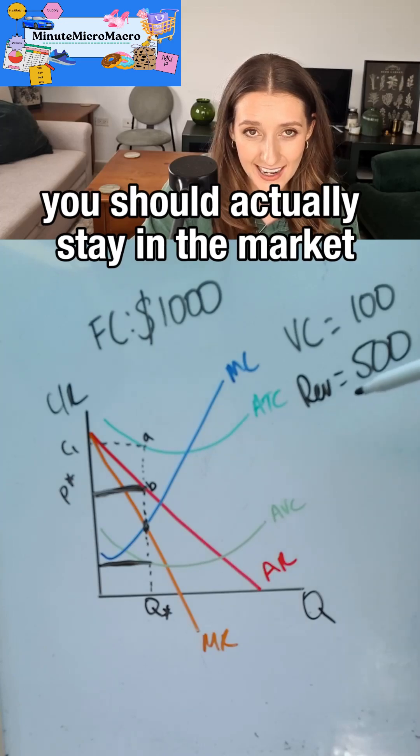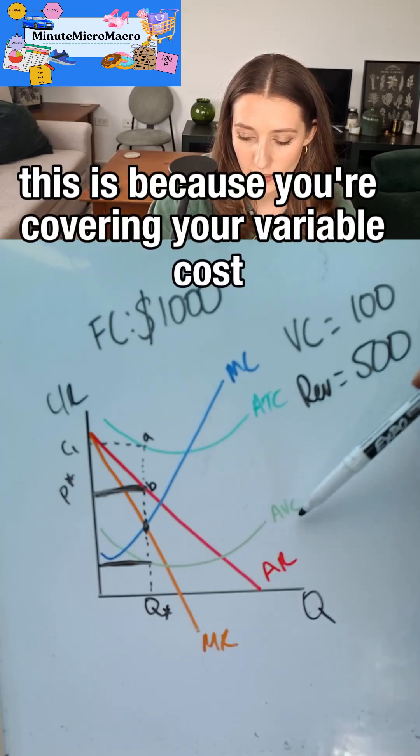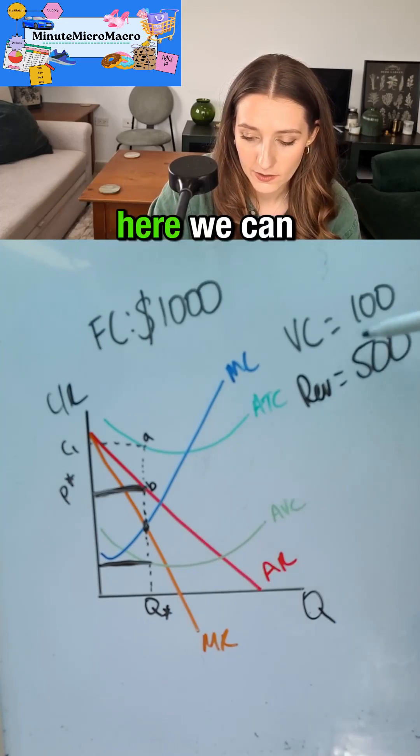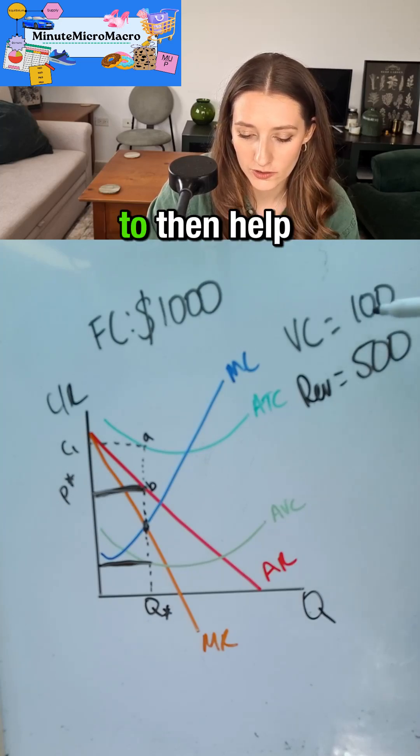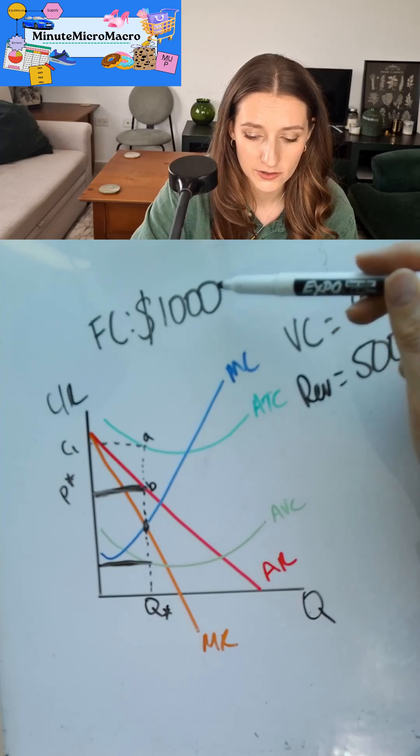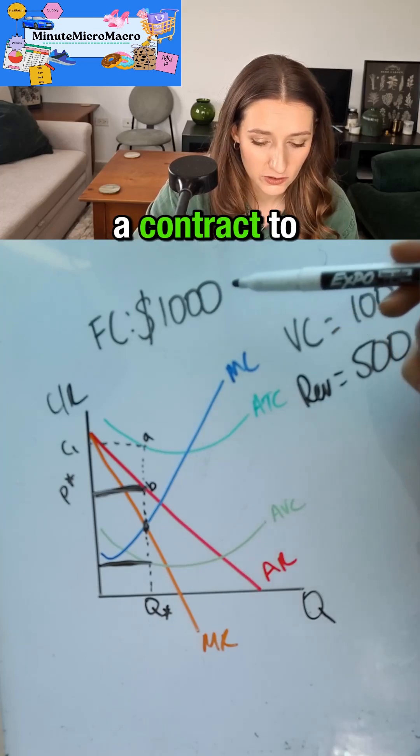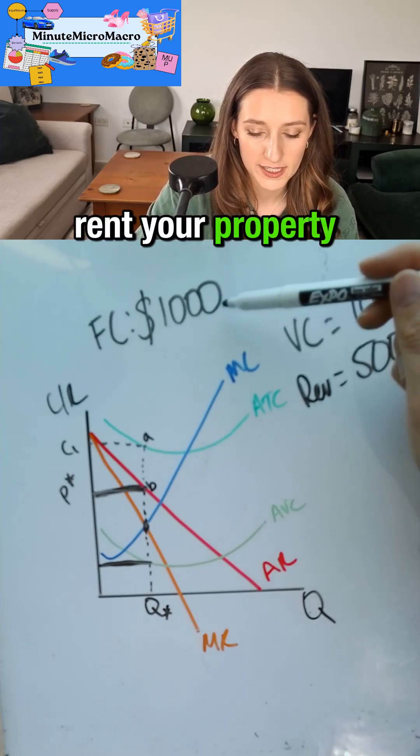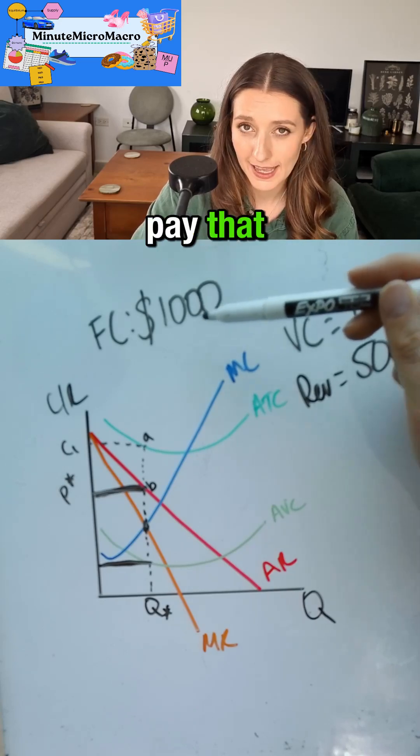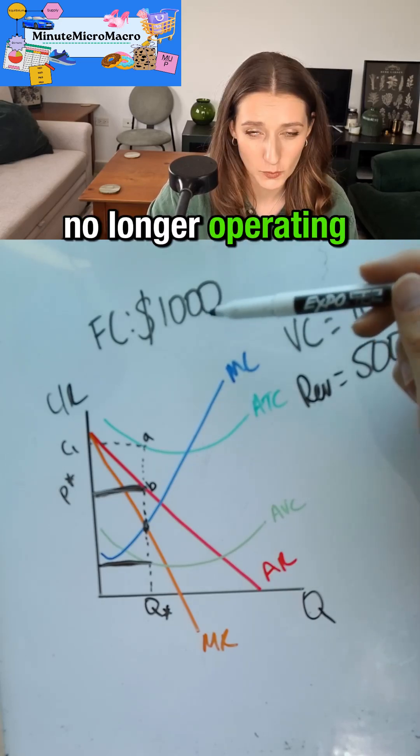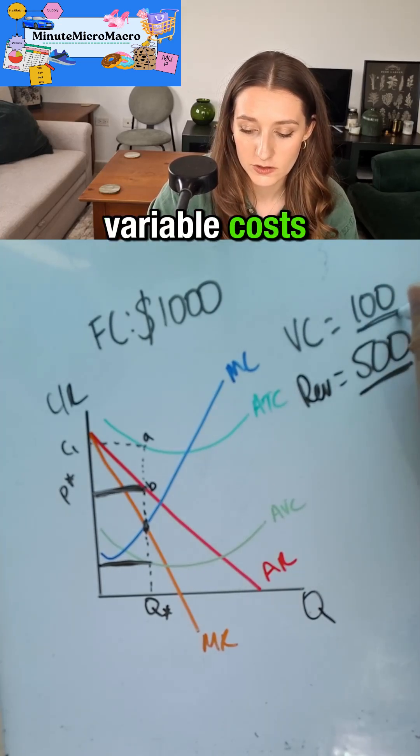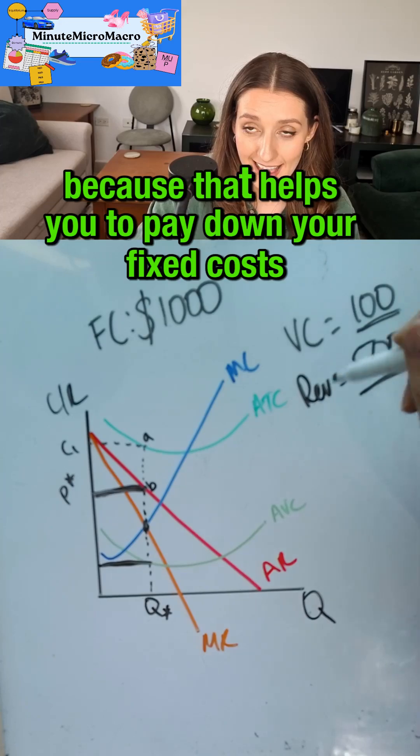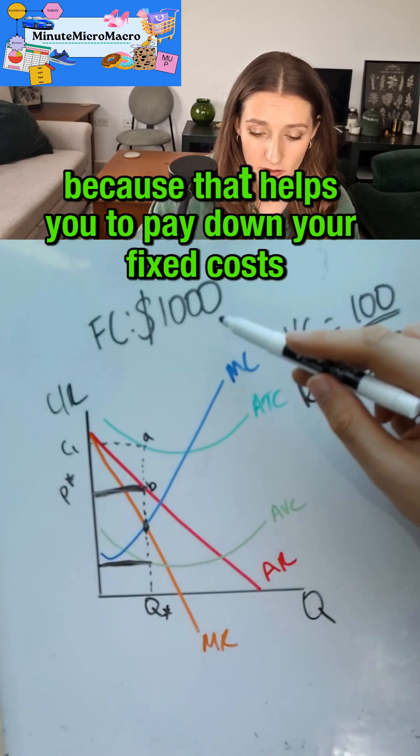In the short run you should actually stay in the market. This is because you're covering your variable costs. Here you can see that they are making four hundred dollars to then help cover your fixed costs. If you go out of business but you've signed a contract to rent your property for five years you have to pay that even if you're no longer operating that business. So as long as your revenue is more than your variable costs you should stay in business because that helps you to pay down your fixed costs.